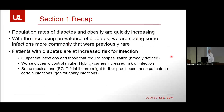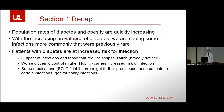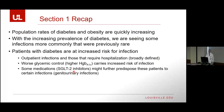To recap section one: population rates of diabetes and obesity are quickly increasing, and with that prevalence we are seeing more infections and more infections that were previously relatively rare. Patients with diabetes are certainly at increased risk — both outpatient infections and those requiring hospitalization. Higher hemoglobin A1c carries an increased risk. Some medications like SGLT2 inhibitors may predispose to genitourinary infections, whereas metformin seems to have a slight protective effect.